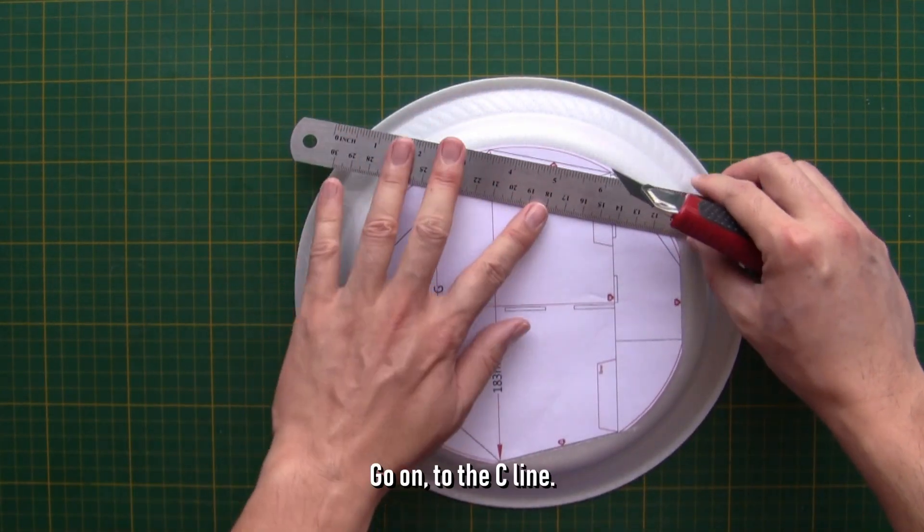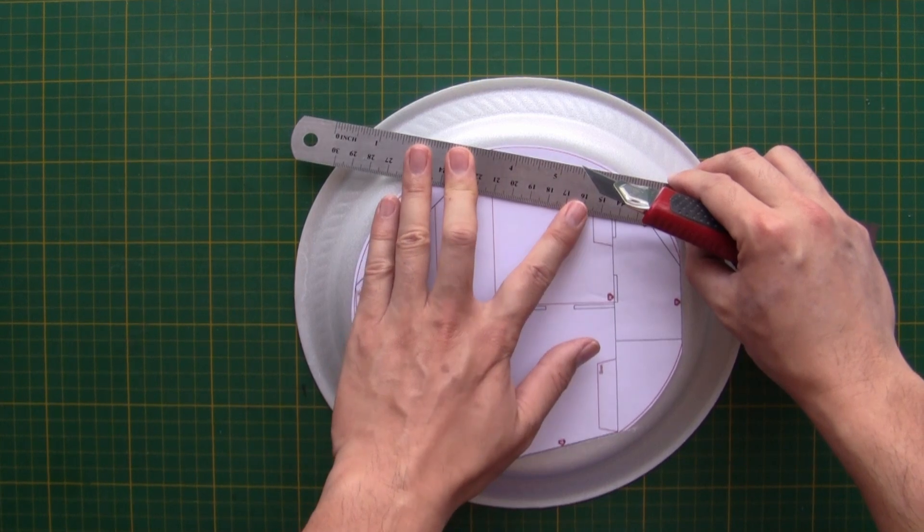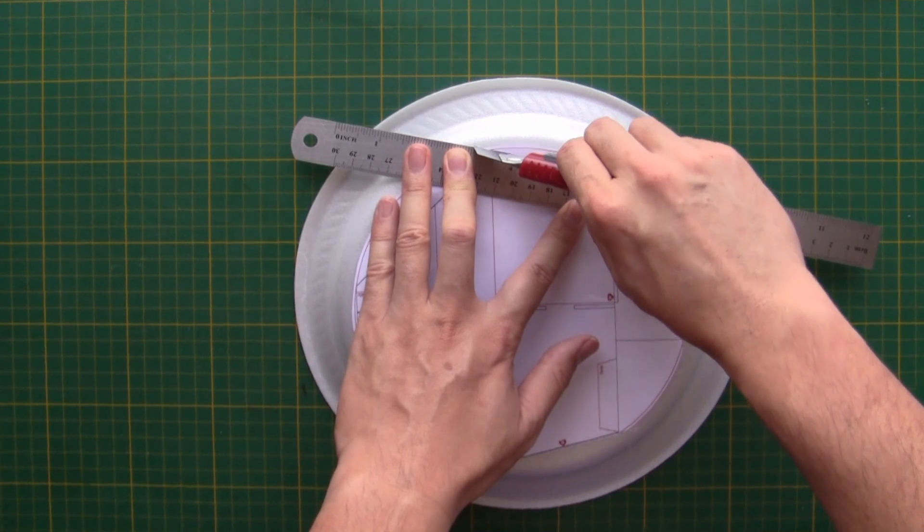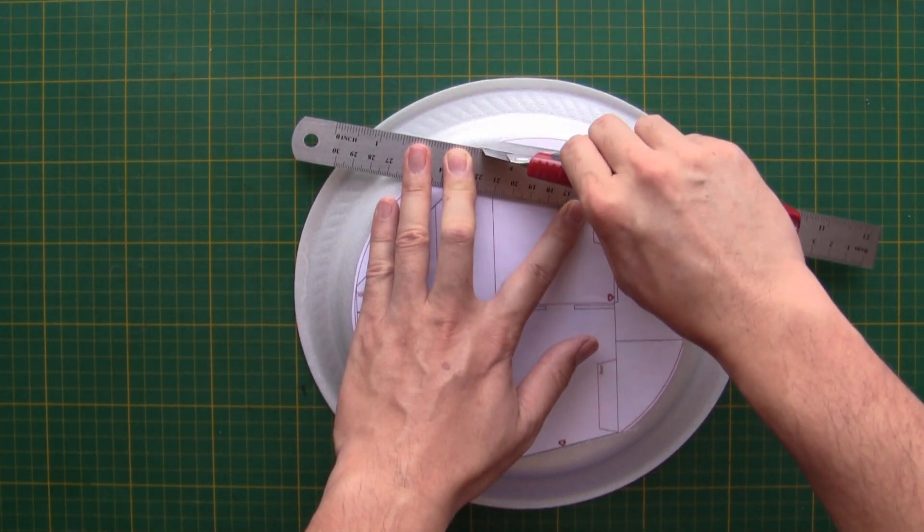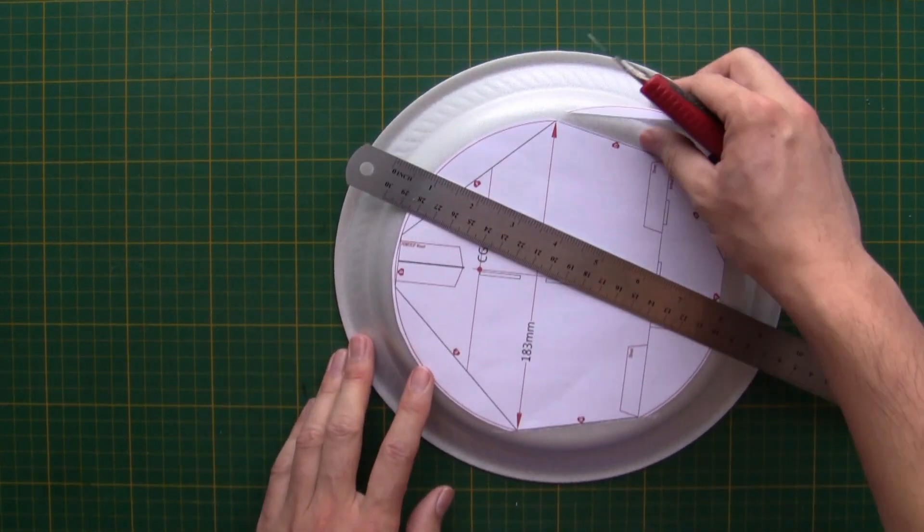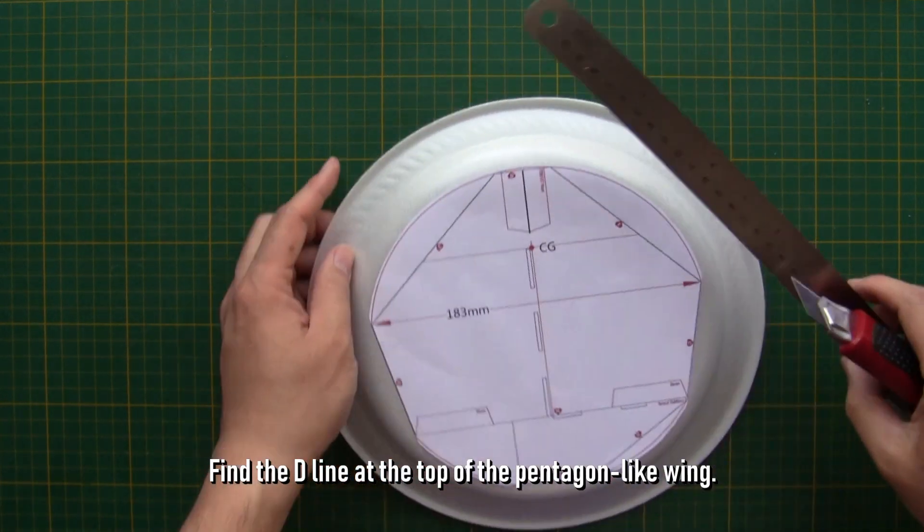Go on to the C line. Find the D line at the top of the pentagon-like wing.